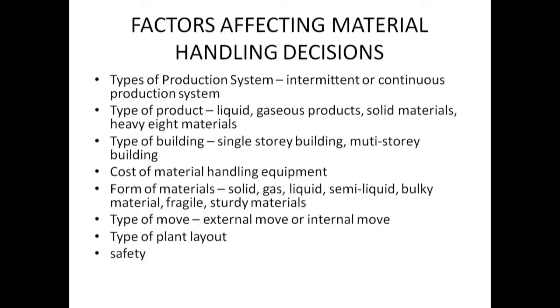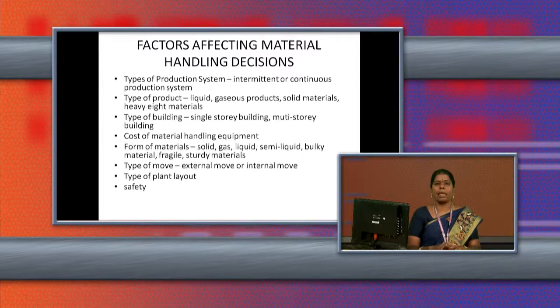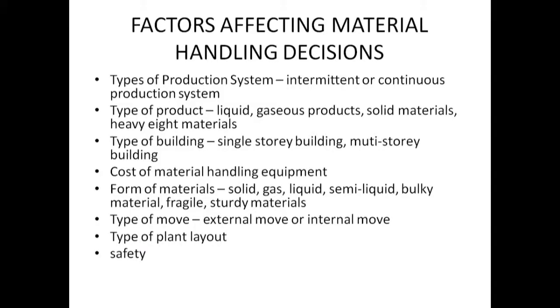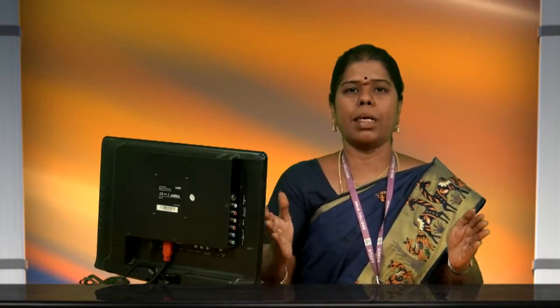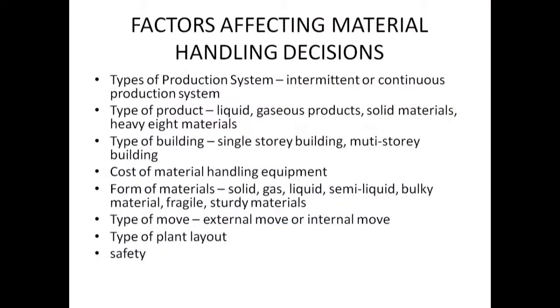The next factor is the type of plant layout. Plant layout means the arrangement of machines, materials, and men inside the production area. Based on the plant layout, we have to decide the material handling equipment. If there is more space for movement of material handling equipment, we can use big equipment. If there is very little space, we have to use simpler machines for material handling.